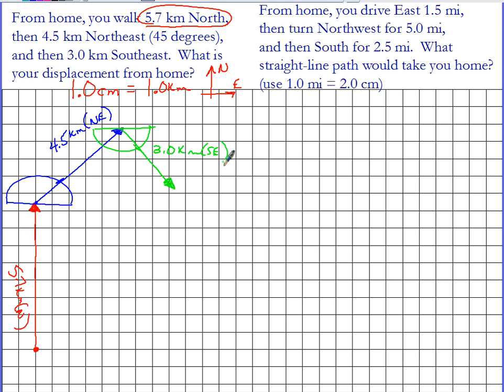So if I want to determine now my resultant from home, that's going to be represented by this vector that spans from the beginning to the end. I'm going to draw that as a dashed line. It is a vector, so it has a magnitude and a direction. That black arrowhead indicates that it's pointed sort of northeast.